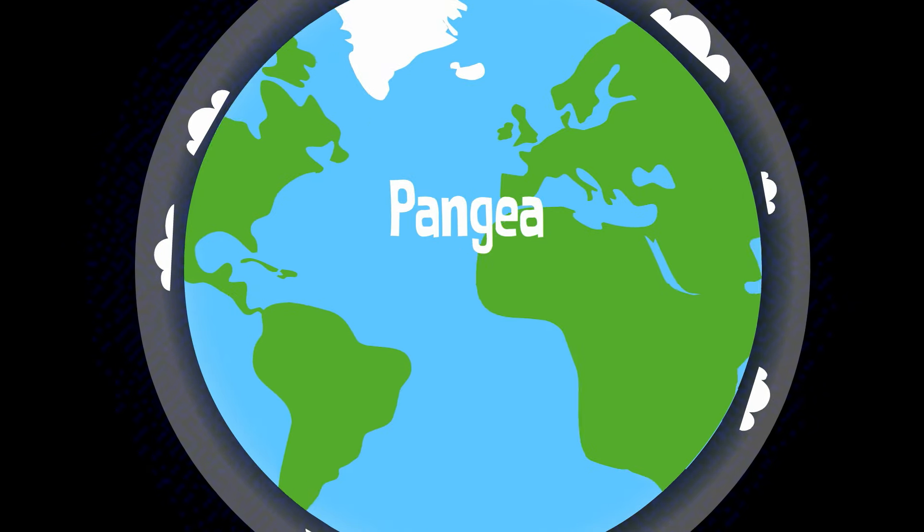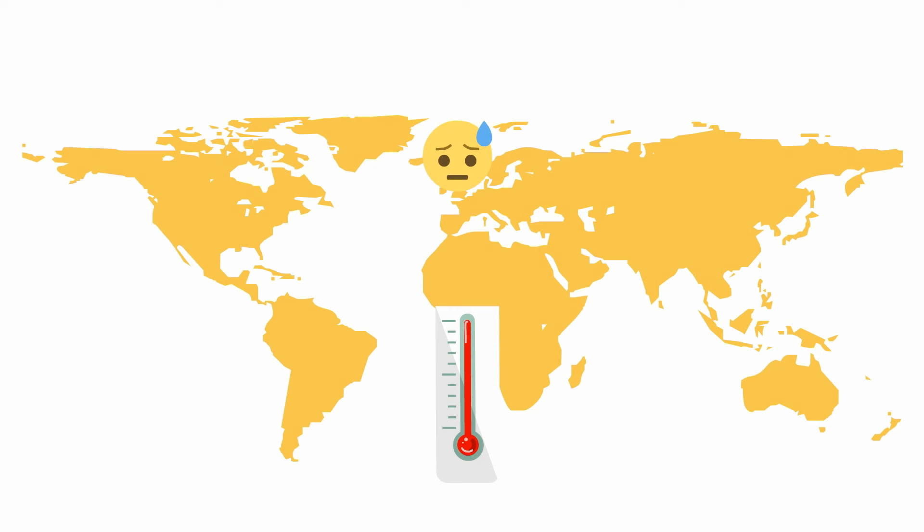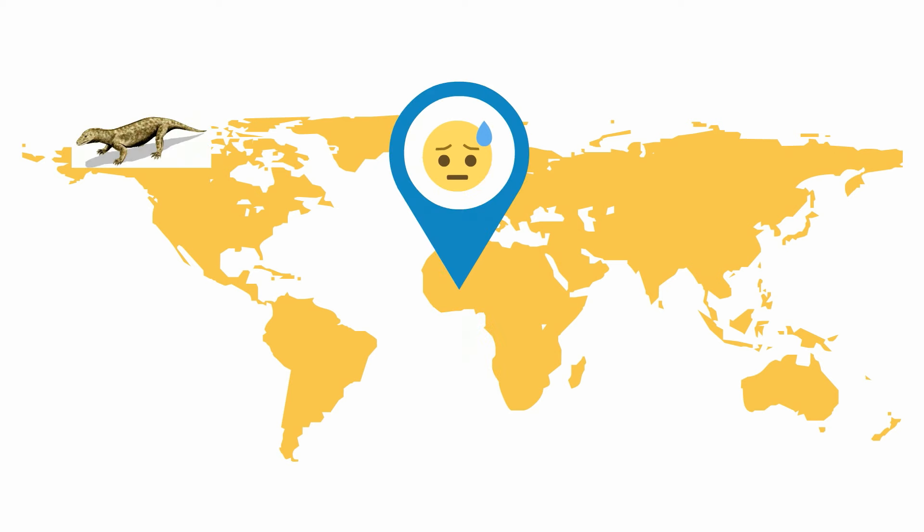The climate was warmer than today. The first mammals appear but are very small and they don't begin to thrive until the Cenozoic Era.